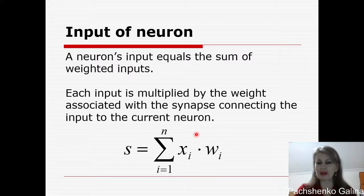Input of neuron. A neuron's input equals the sum of weighted inputs. Each input is multiplied by the weight associated with the synapse connecting the input to the current neuron. So here for example x1 multiplied by w1. Then we sum this multiplication. And this will be our S, the input of our neuron.